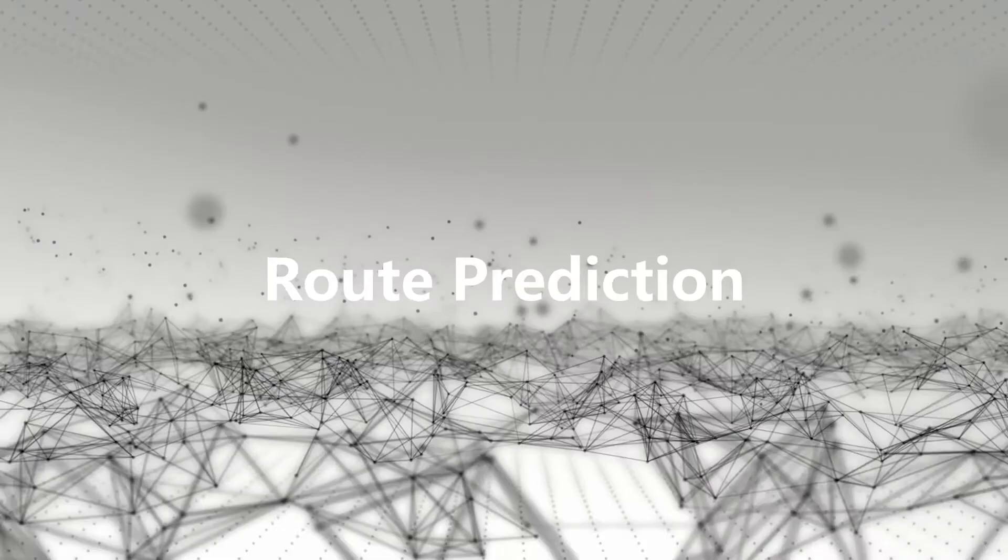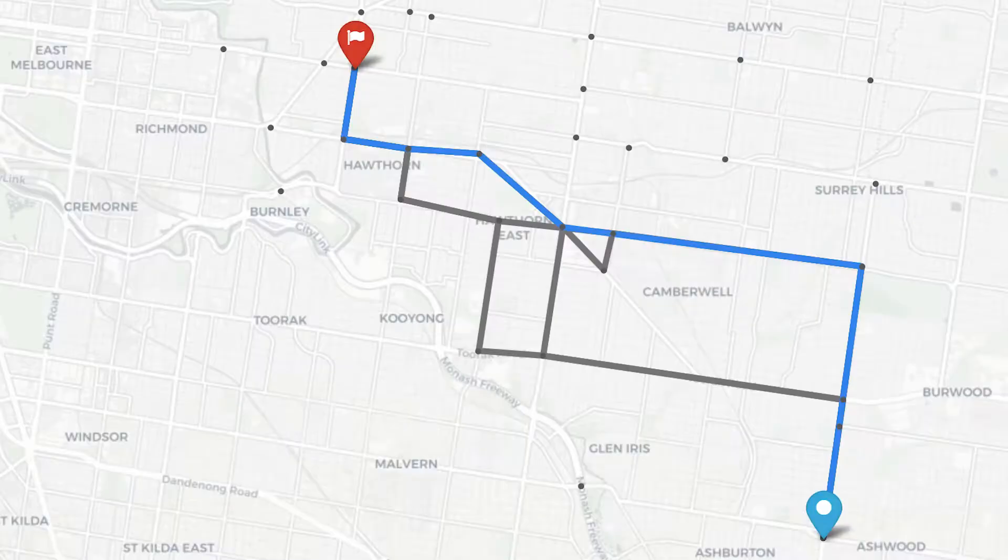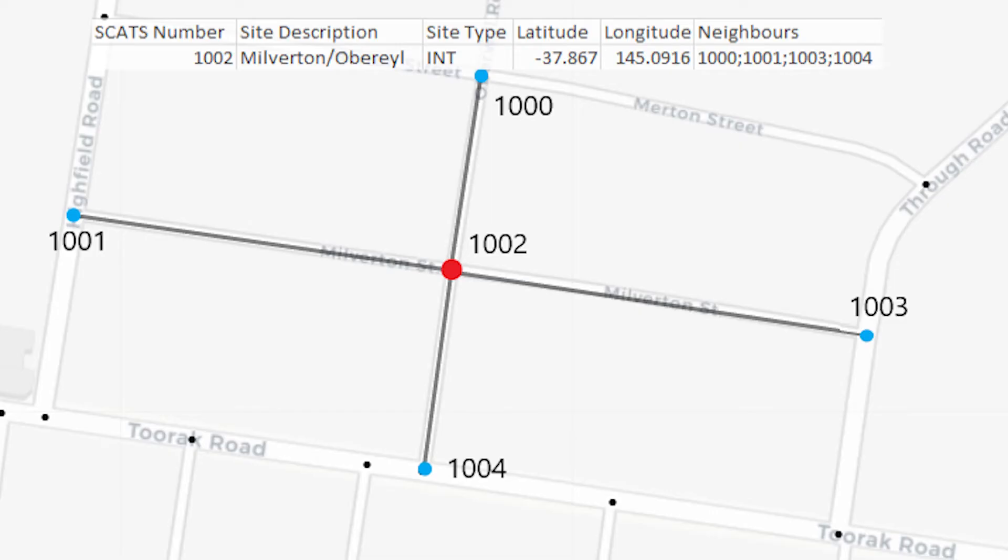Using the data provided by VicRoads and predictions from our machine learning algorithms, we created a route prediction system. This route prediction system was used to determine the best five routes for a specified time when traveling in Boroondara. To accomplish this, the ASTAR algorithm was used. ASTAR is a graph search algorithm, so we needed to convert the SCATS sites to a graph by representing each SCATS site as a node in a graph.